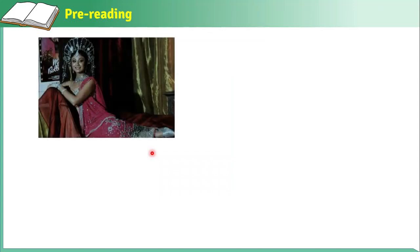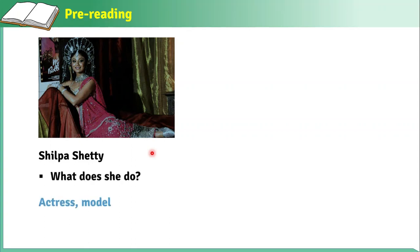Now for pre-reading, I want you to look at the picture of the woman here. What can you see? What's her name? The woman in this picture — her name is Shilpa Shetty. What does she do? She is an actress and she is also a model.